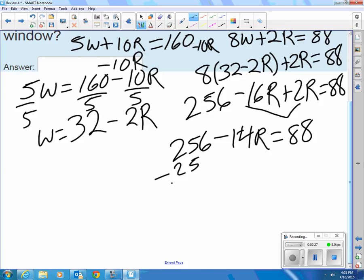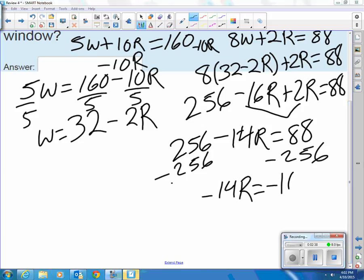And that gives me 256 minus 14R equals 88. If I subtract my 256 from each side, then that tells me that negative 14 of whatever I get paid for a room equals negative 168. And then dividing each side by negative 14. One room is worth $12.